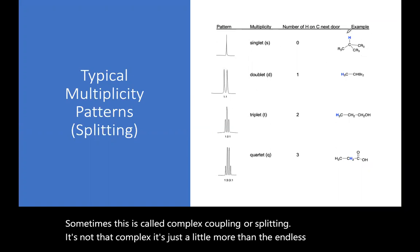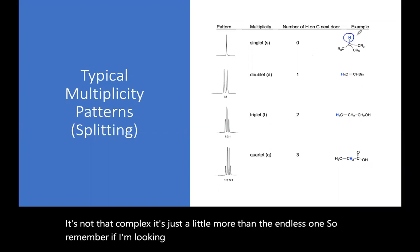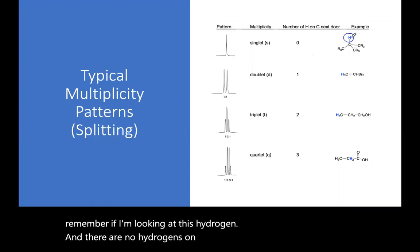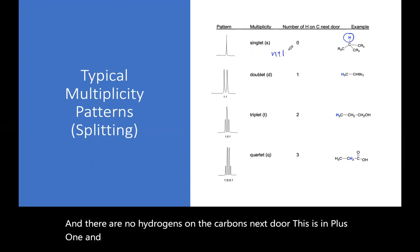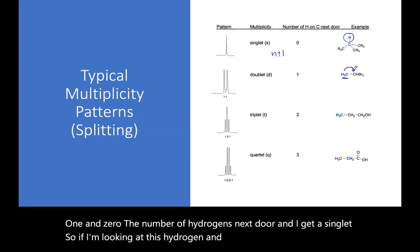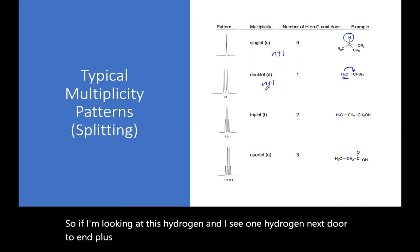So remember, if I'm looking at this hydrogen and there are no hydrogens on the carbons next door, this is n plus one and n is zero, the number of hydrogens next door, and I get a singlet. If I'm looking at this hydrogen and I see one hydrogen next door, it's n plus one, that's one plus one, and I get a doublet.